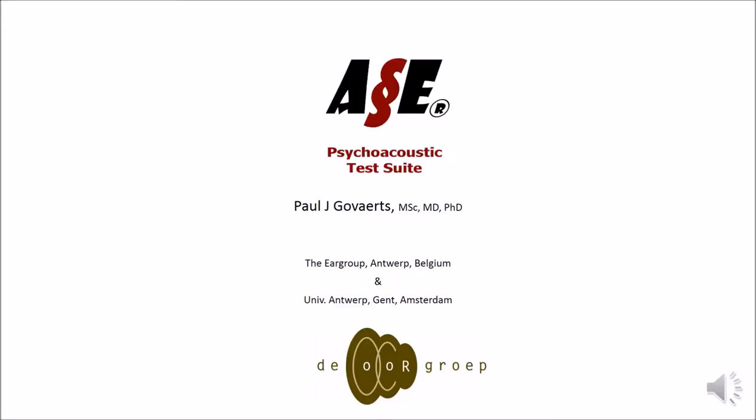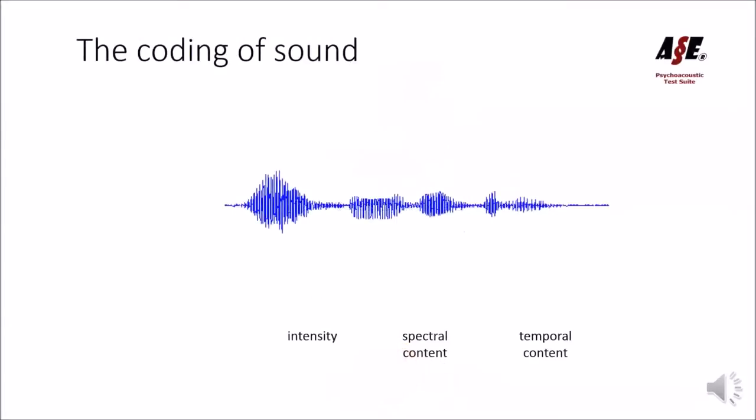If you want to know whether a cochlea is functioning well or not, we have to look at the physiological function of the cochlea, which is coding of sound, converting the different components of sound to proper electric code on the acoustic nerve.